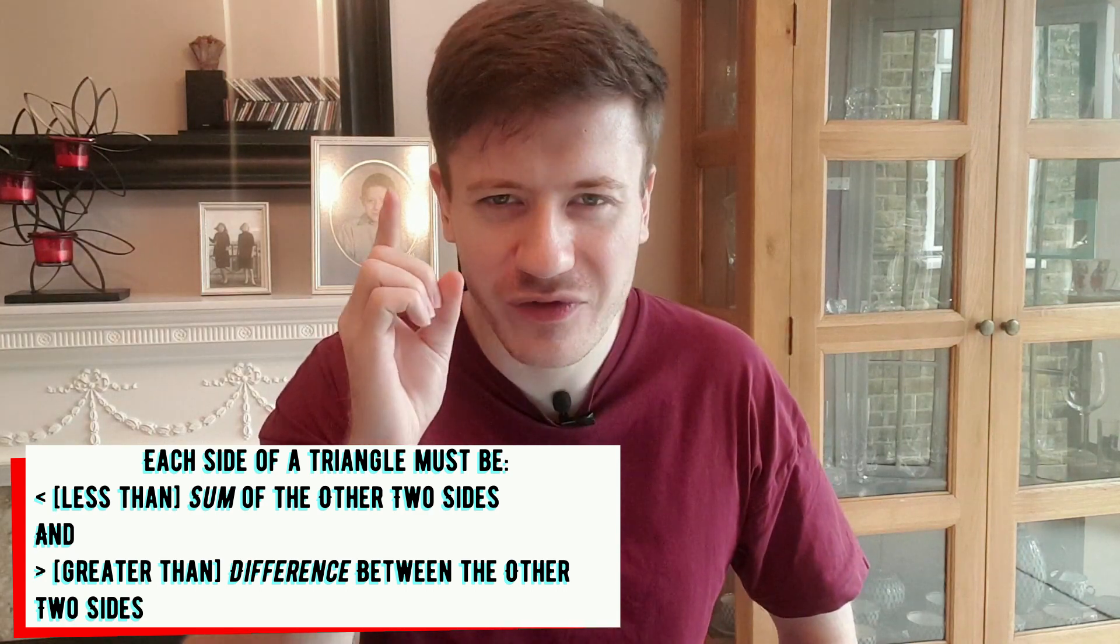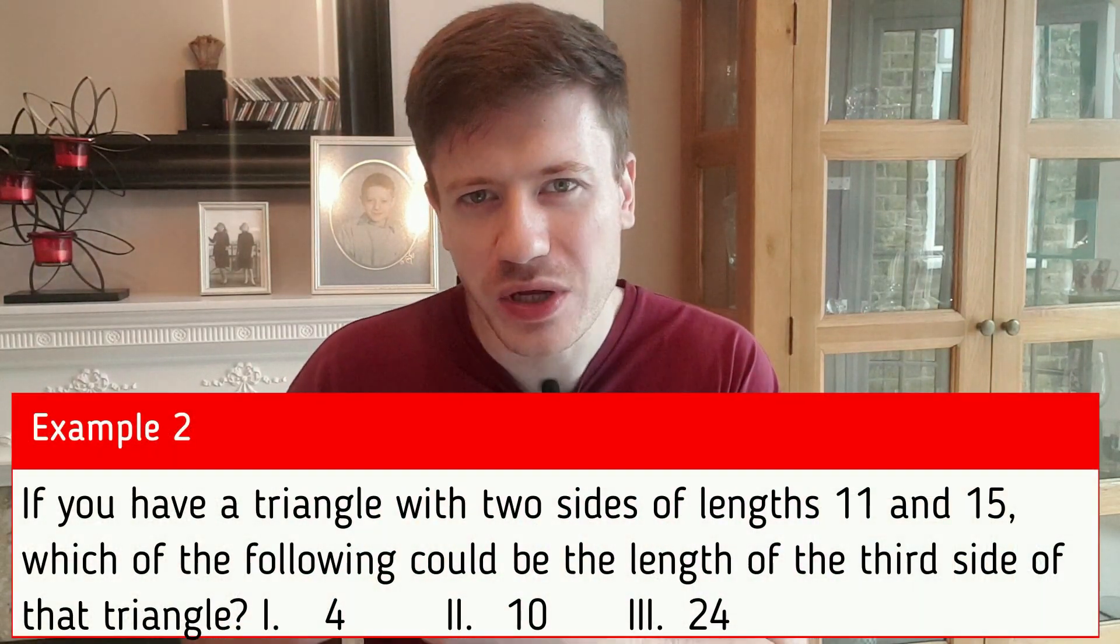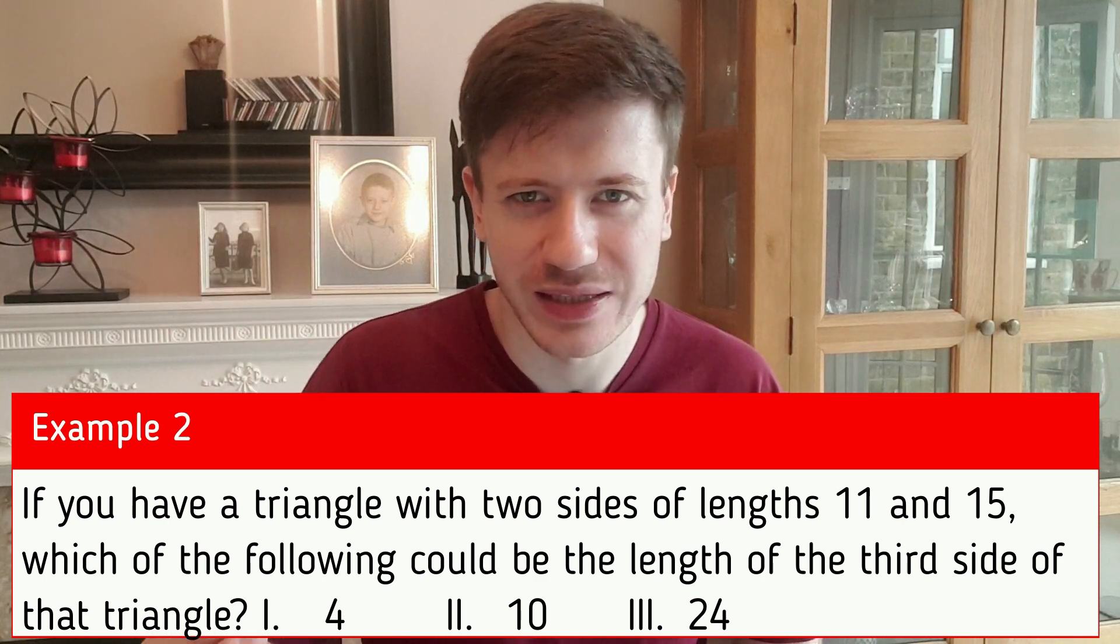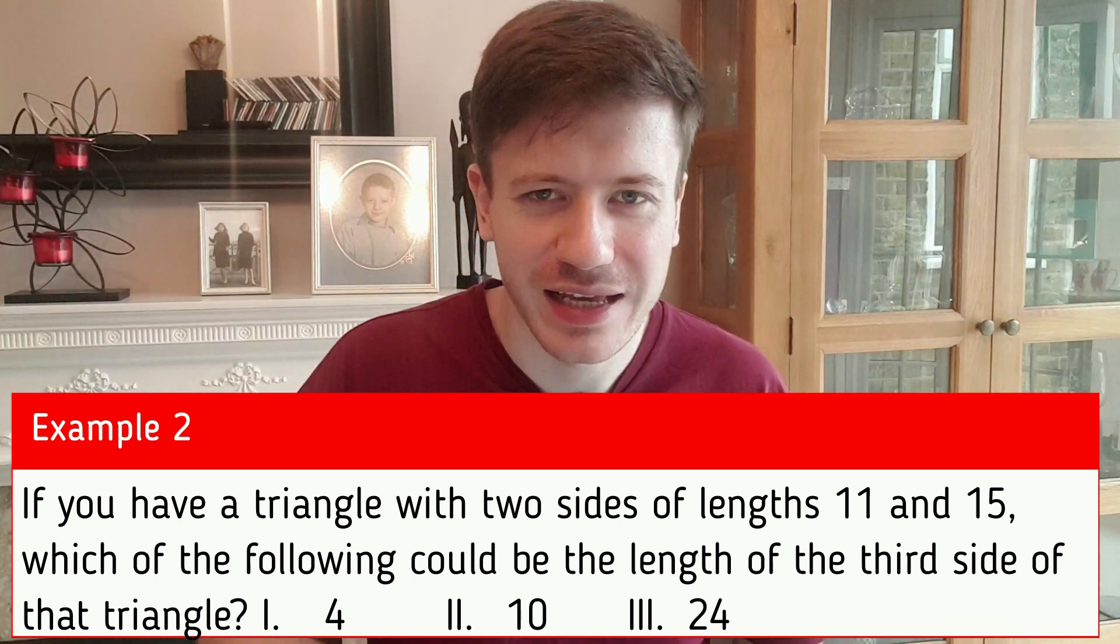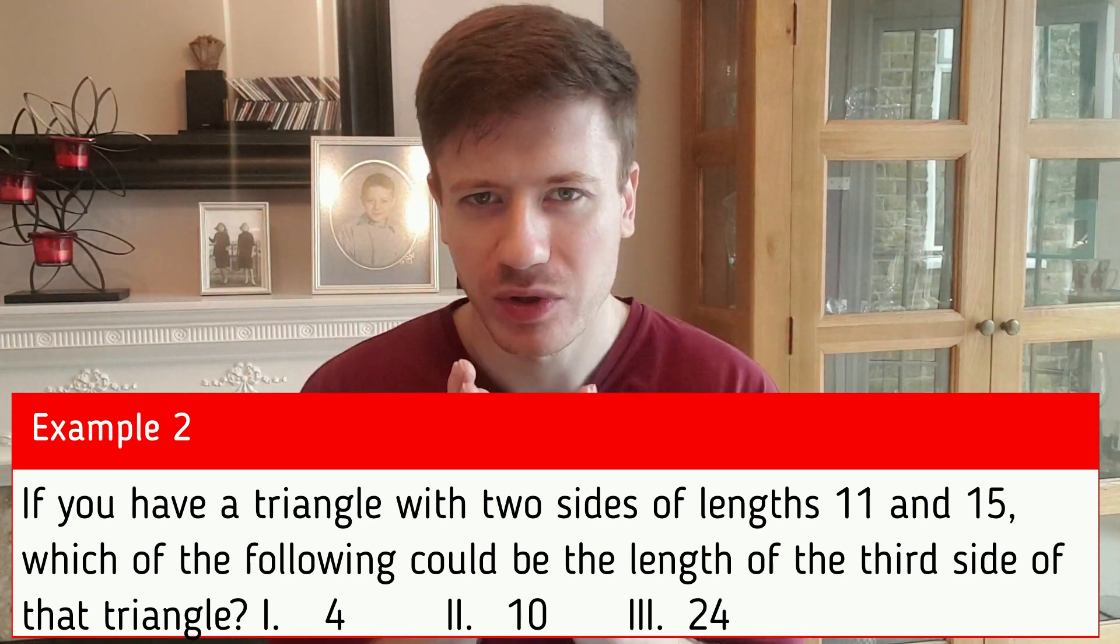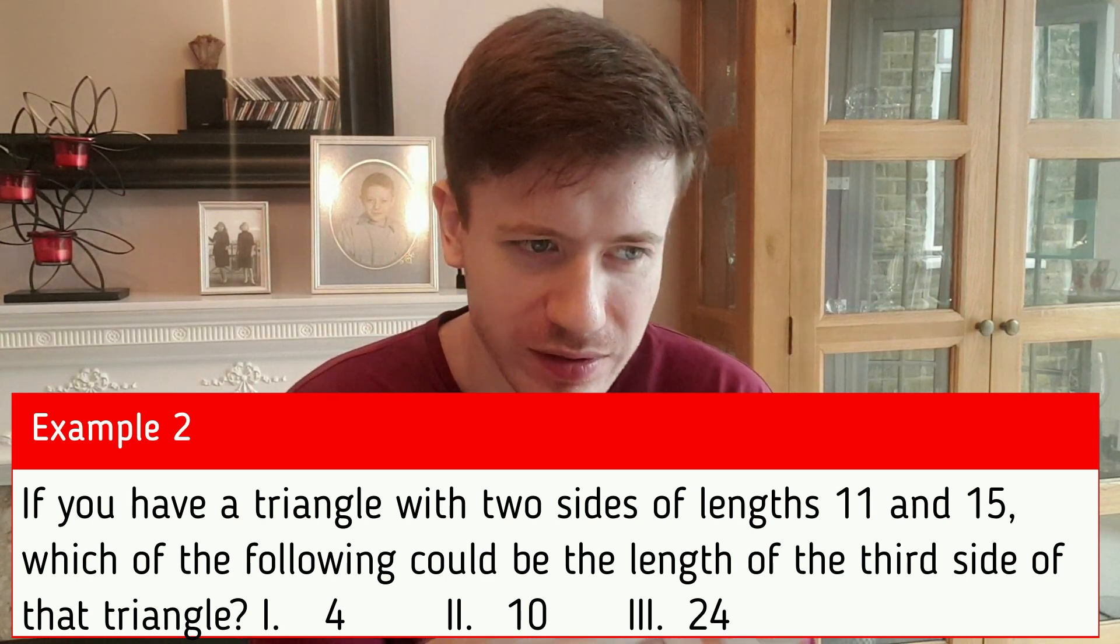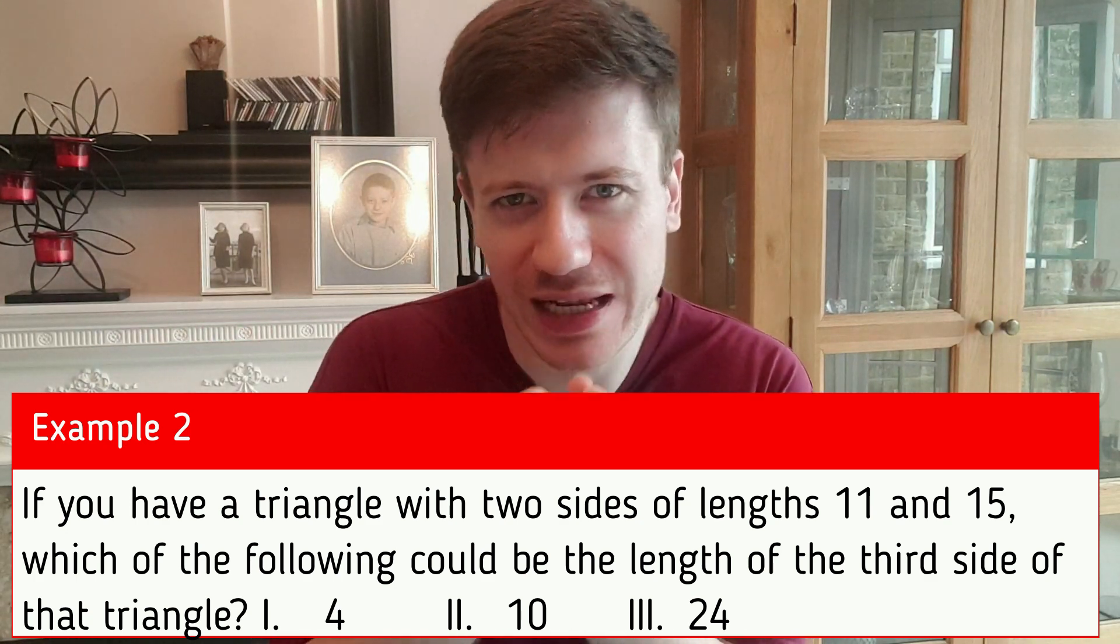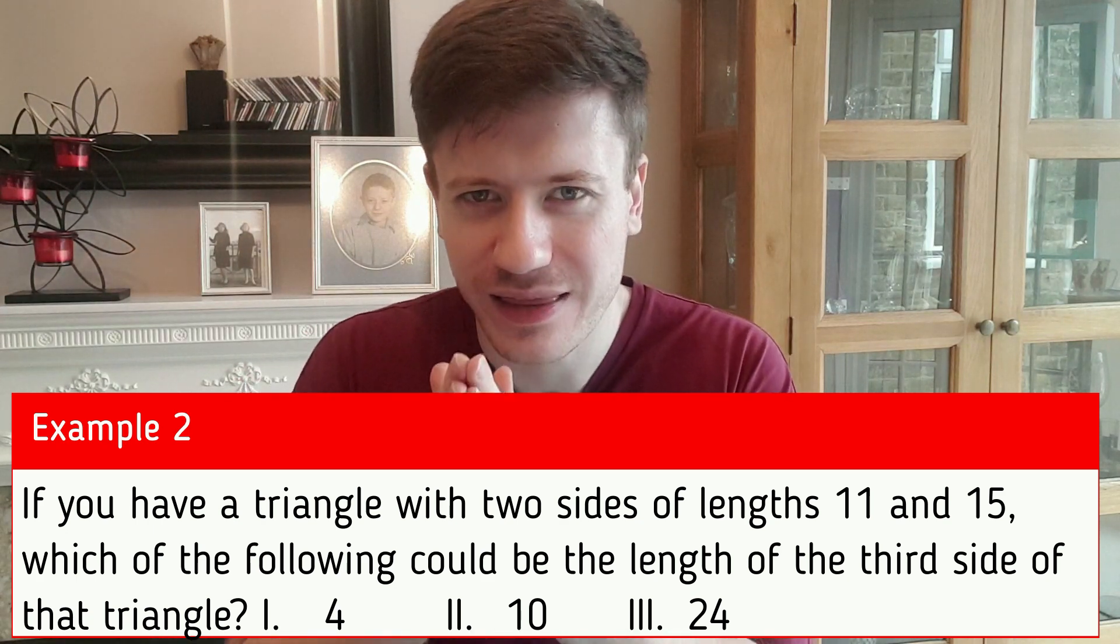Time for me to test you out. If you have a triangle with two sides of length 11 and 15, which of the following could be the third side of that triangle: 4, 10, or 24? You can pick one, two, or three. Tick as many that apply. The answer is that 10 and 24 could be the third side of the triangle, but 4 could not. How did we get that? Well, look at those two existing sides that we've got: 11 and 15. What's their sum? 11 plus 15 is 26, so that's the upper limit for the third side. What's the difference between 11 and 15? 15 minus 11 is 4, so that's the lower limit for what that third side can be. This means that third side has to be between 4 and 26, not including 4 or 26.